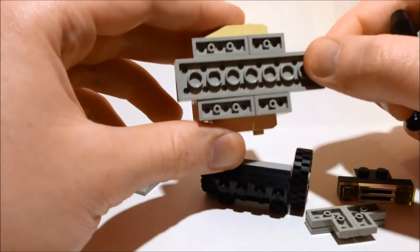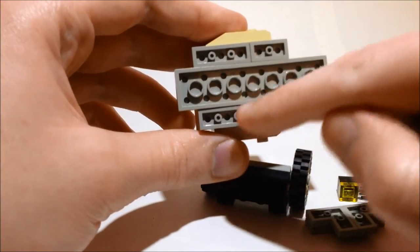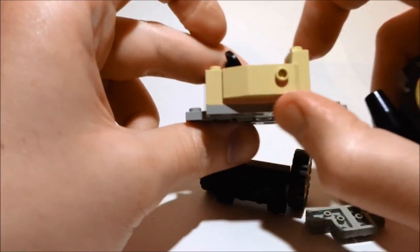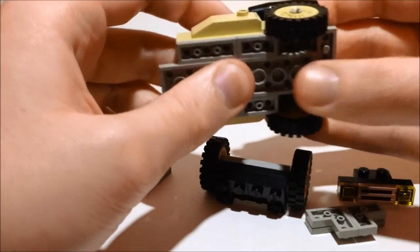Underneath here we have a 2x8 plate with 1x2 plates and 1x3 plates to build up the light grey stripe down the side. This back piece attaches here on the back.